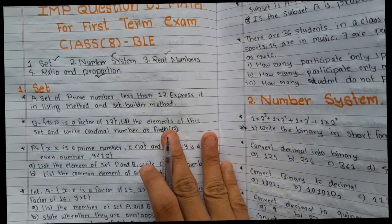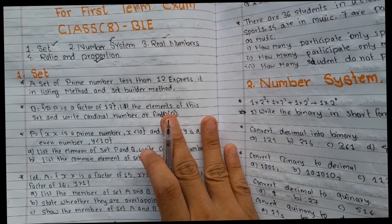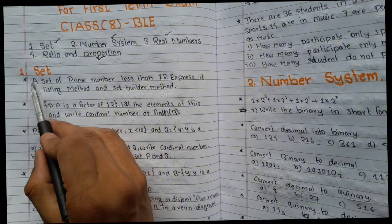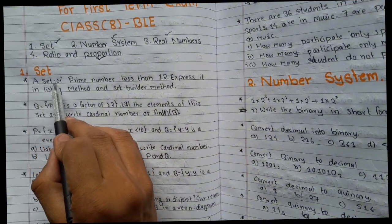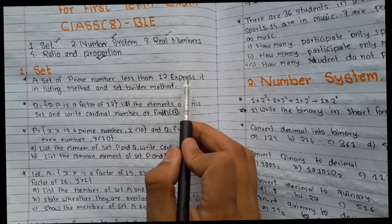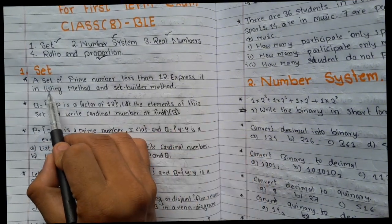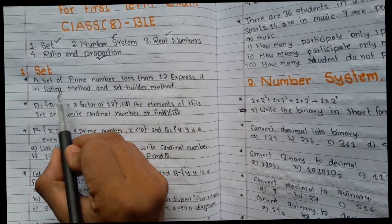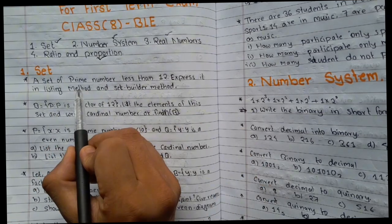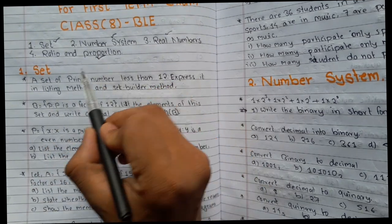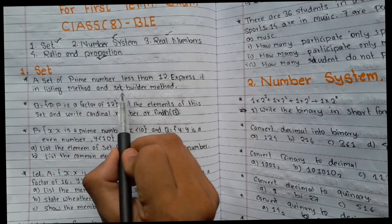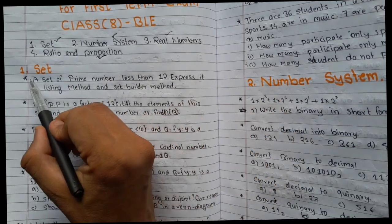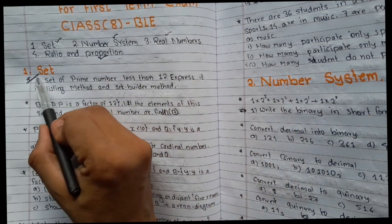So, we will discuss chapter 1 Set. How many questions are going to be discussed? Number 1: a set of prime numbers less than 2. Express it in listing method and set builder method. This question is going to be discussed. The listing method is also known as the roster method. This is a very important question.